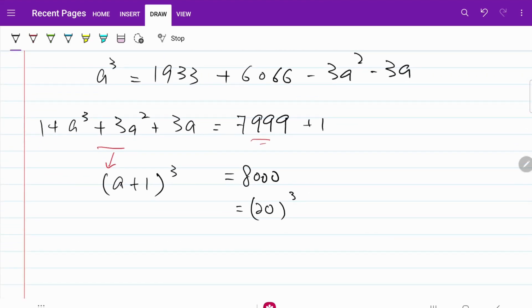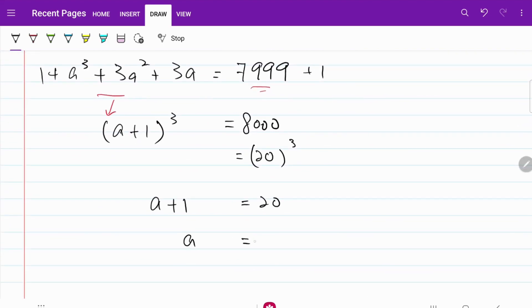From there, I can cancel out the cubic function on both sides. So what I have now is a plus 1 is equal to 20. Therefore, a is equal to x plus y is equal to 19. That's the answer for today's practice question.